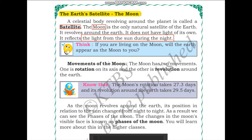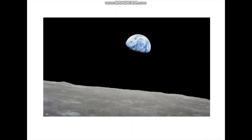Think: if you are living on the moon, will the Earth appear as the moon appears to you? Suppose you go to the moon and you take a look at the Earth — what will you be able to see? This is an image of the Earth as taken from the moon. You can see the blueness of the oceans, the clouds, etc. This is how you will be able to see the Earth from the moon.